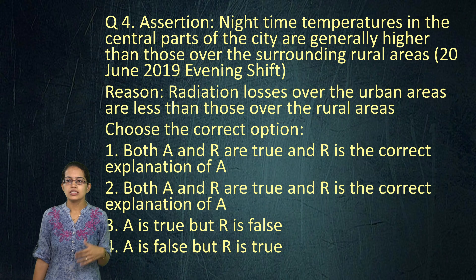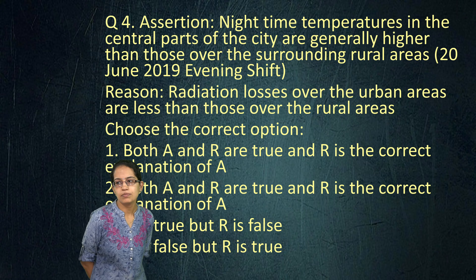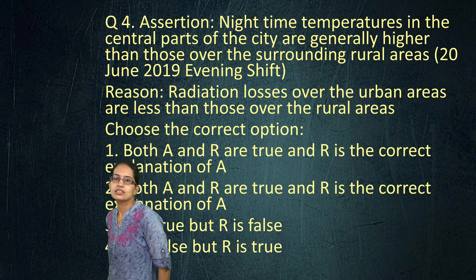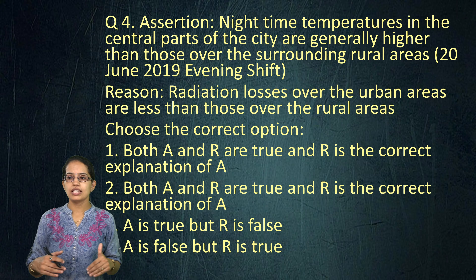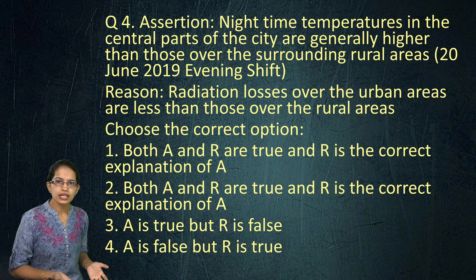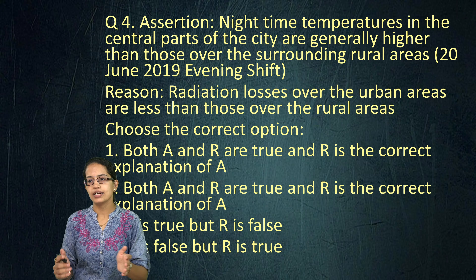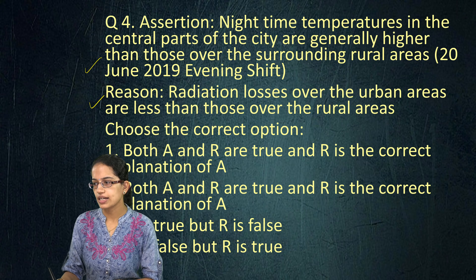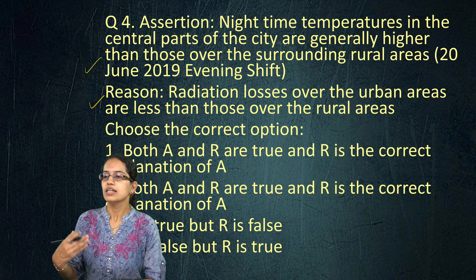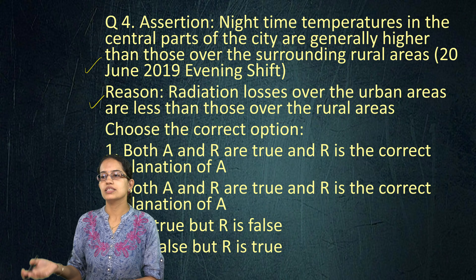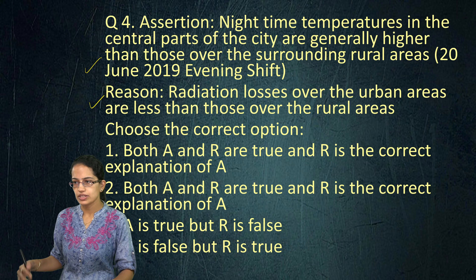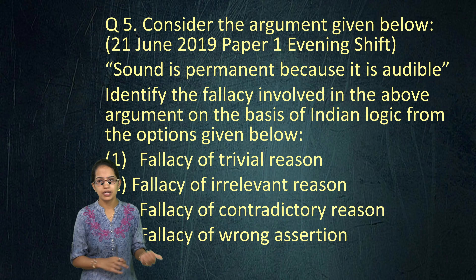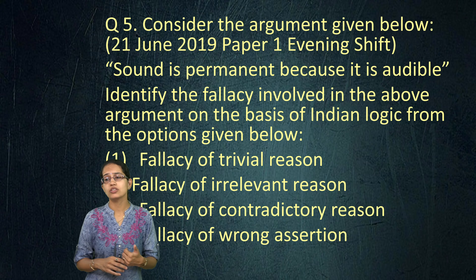The next question states: the night-time temperature in the central part of the city is higher than the surrounding areas because radiation loss over urban areas is less than over rural areas, and as such you have the urban heat island effect that is generated. Both the assertion and reason are correct, and the reason stands as the correct explanation for the assertion — that's one of the reasons why night-time temperature is higher in city areas compared to rural areas.